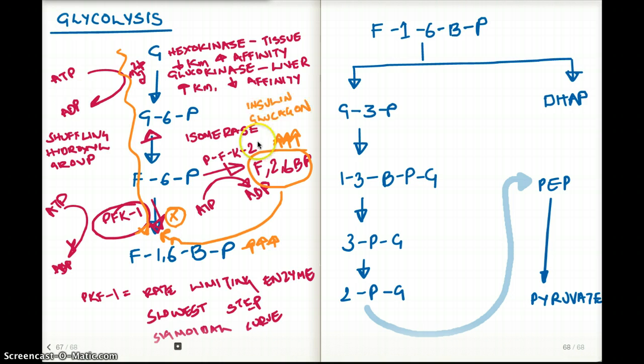The enzyme that stimulates PFK2 is going to be insulin, and the one that inhibits is going to be glucagon. Don't get confused with the fact that PFK1 is stimulated by insulin or inhibited by glucagon. No, it's only going to be PFK2, which is going to be stimulated by insulin and inhibited by glucagon. So those were the regulators for PFK2.